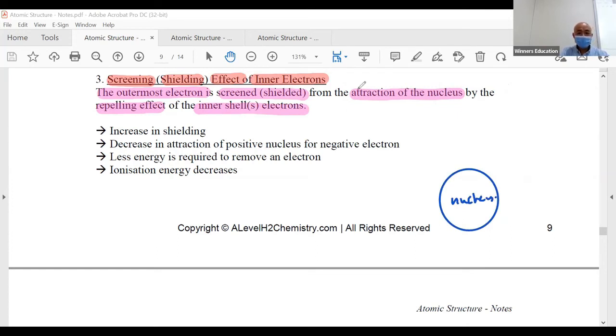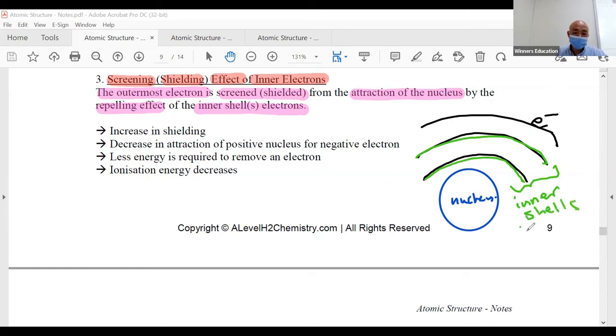If I draw it out for you, this is the nucleus. Then you have your shells. This electron at the most outside is called the valence shell electron. This one and this one are inner shells, which provide the shielding effect.